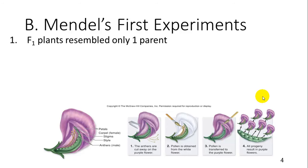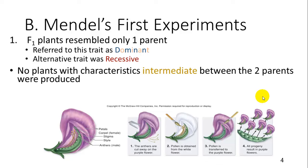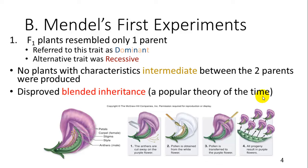In Mendel's first experiment, the F1 plants resembled only one parent — they were just purple. This is referred to as the dominant trait. The other trait that was not expressed was the recessive trait. No plants with intermediate characteristics were found — no pink or light blue. Flowers were either purple or white. This disproved the theory of blended inheritance, which was popular at the time, showing it was one or the other, not blended.